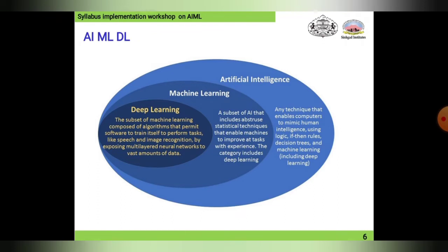Deep learning is a subset of machine learning, composed of algorithms that permit software to train itself to perform tasks like speech and image recognition by exposing multi-layered neural networks to vast amounts of data. Machine learning is a subset of AI that includes statistical techniques enabling machines to improve at tasks with experience — and its category includes deep learning. Finally, AI consists of machine learning and deep learning — any technique that enables computers to mimic human intelligence using logic, if-then rules, decision trees, and machine learning including deep learning.